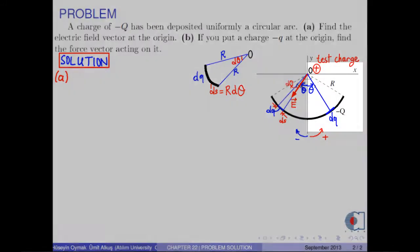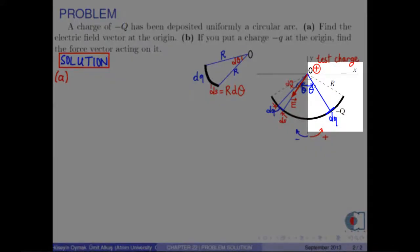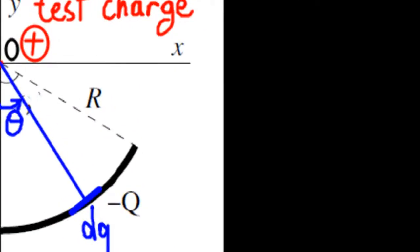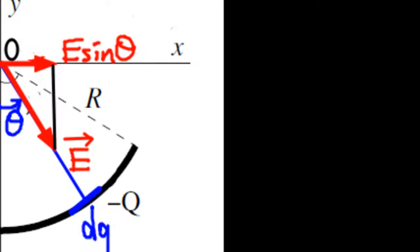Now, assume that there is another differential charge dq on the positive side. Since it is negative, the electric field is drawn from point O to dq.